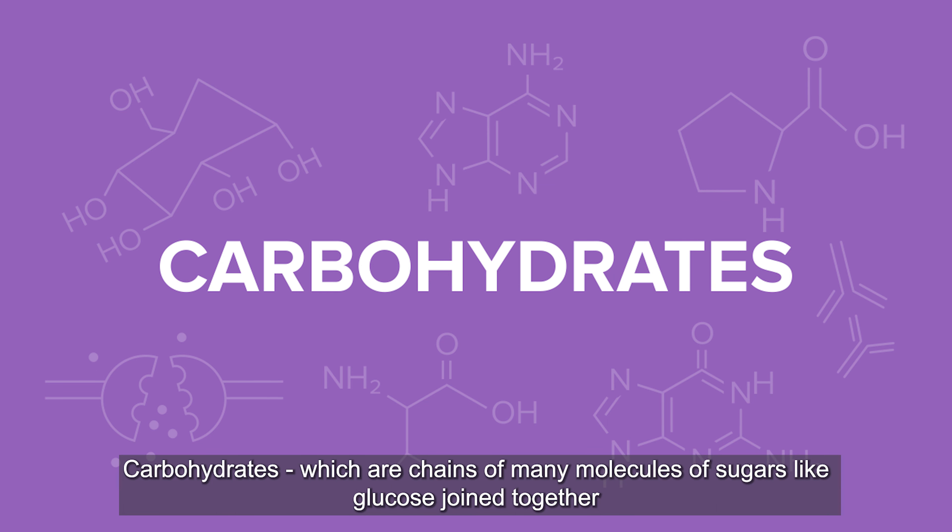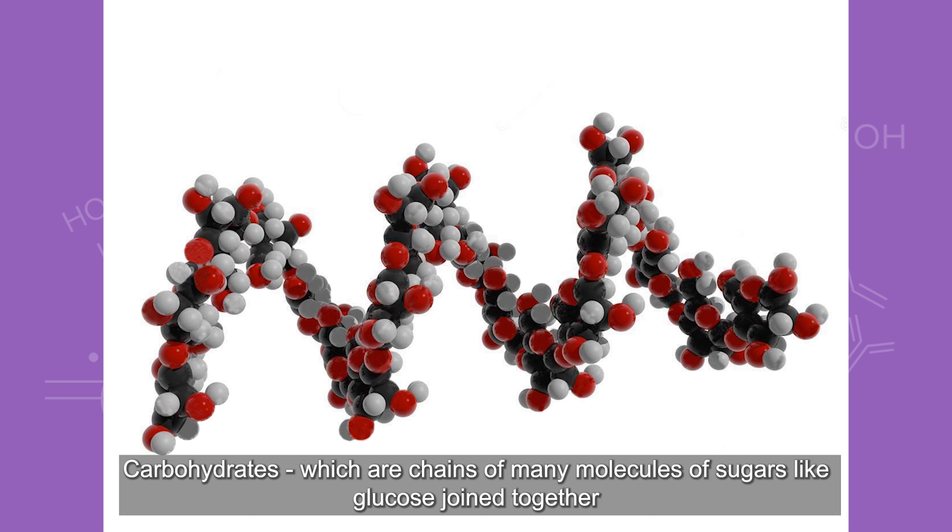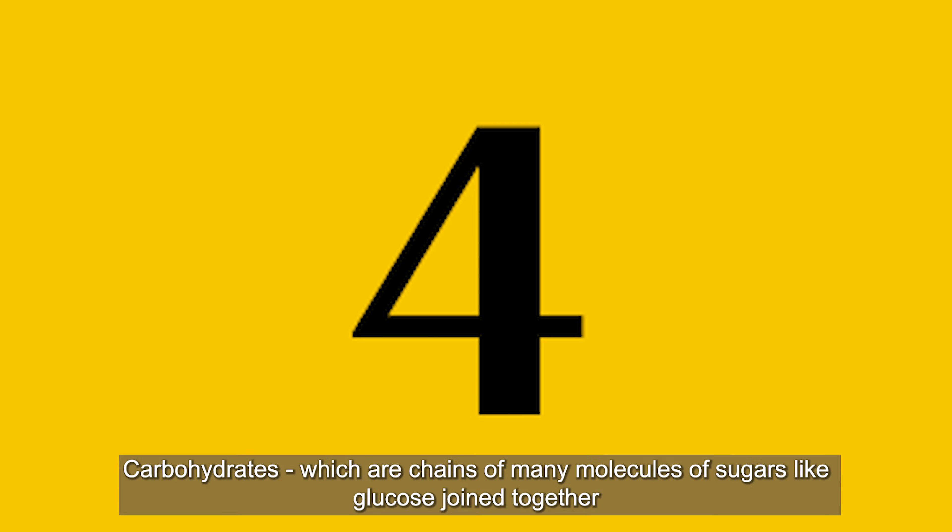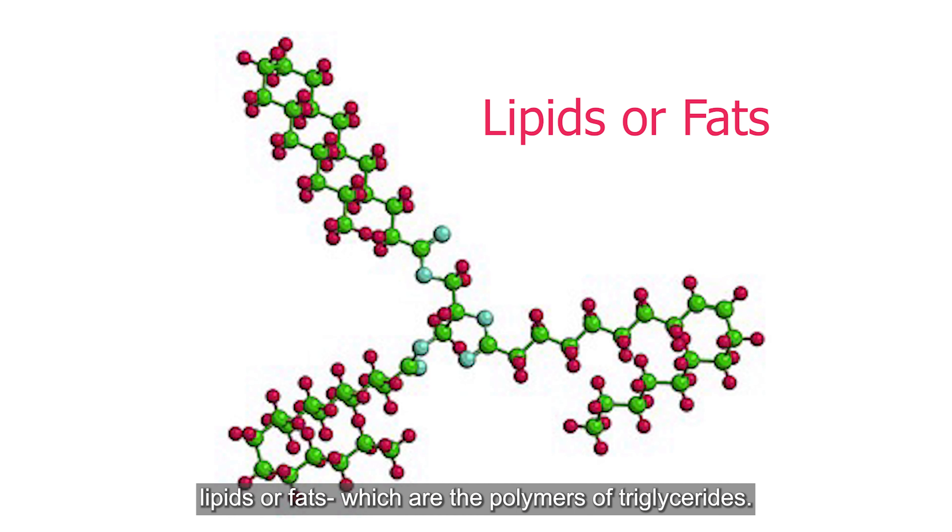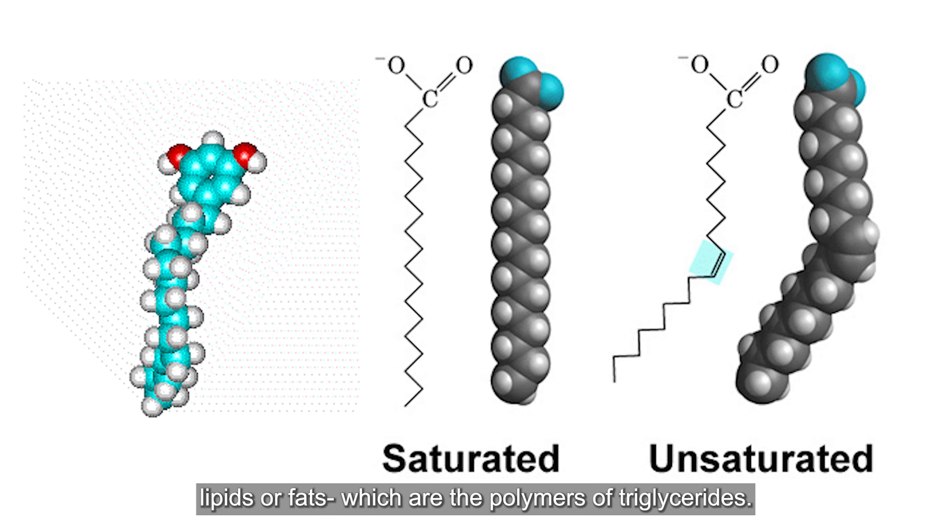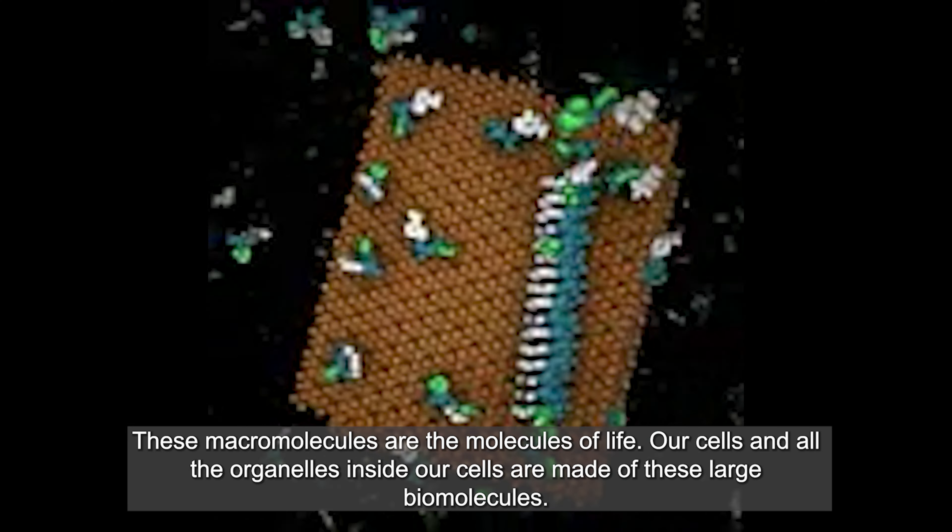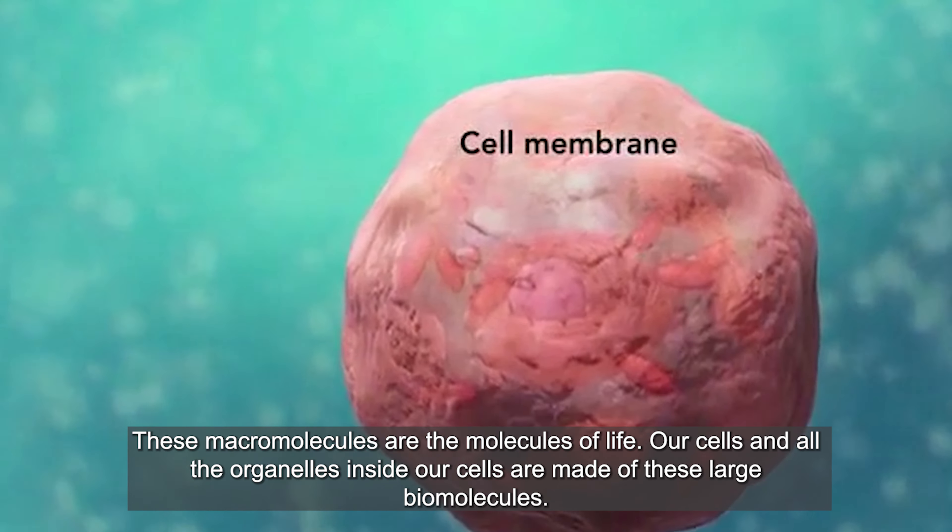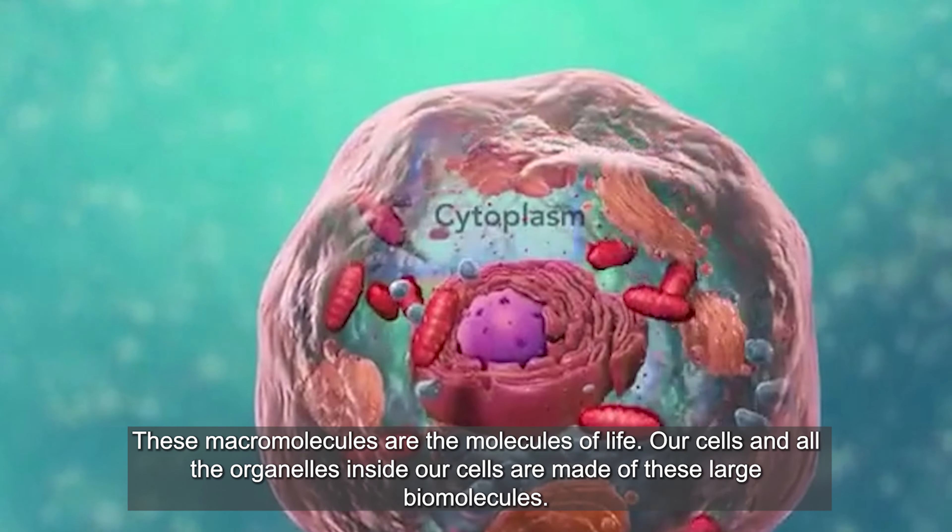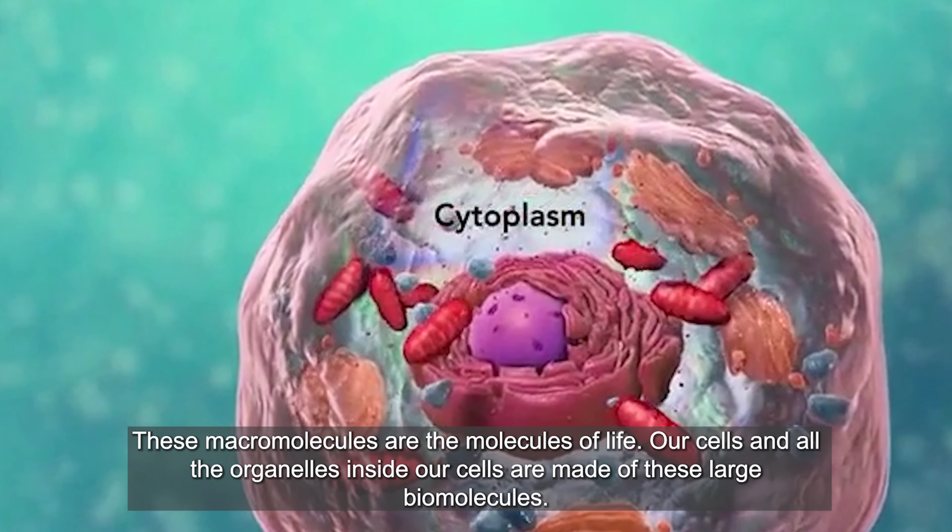And the second type of molecule is nucleic acids called DNA and RNA which are formed when nucleotides join together. The third type is carbohydrates which are chains of many molecules of sugar like glucose joined together. And the fourth one is lipids or fats which are the polymers of triglycerides.